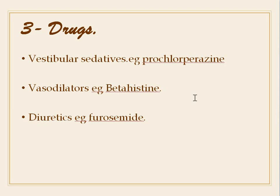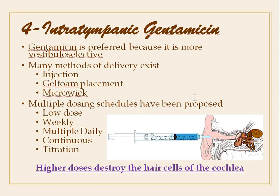Drugs for the chronic phase include vestibular sedatives like prochlorperazine, the vasodilator betahistine, and diuretics such as frusemide. Intratympanic gentamicin is preferred because it is more vestibular selective. Methods of delivery include injection, gel foam, placement, and micropump. Multiple dosing schedules exist: low dose weekly, multiple daily, continuous, and titration. Higher doses can destroy the hair cells of the cochlea.